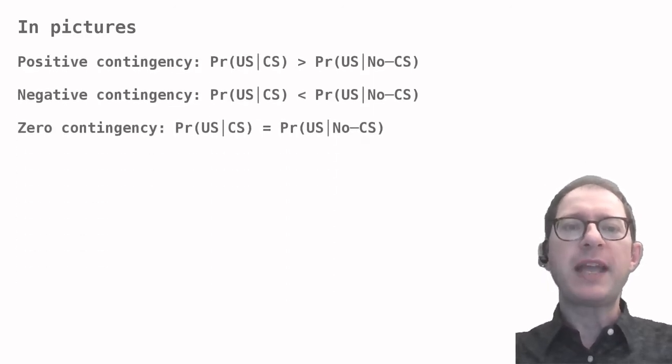Let's see what this means with the help of some pictures. I will show you three different ways in which the CS and US can be arranged in time. This would be for a Pavlovian conditioning experiment, but we will later see that it also works for instrumental conditioning. Then we will try to guess what an animal would learn in each case. In the next slide, we'll see what animals actually learn.